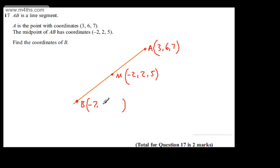I've gone down by 4, so I'm just going to go down another 4. I've gone down by 2, so I'm going to go down another 2, and that gives us now the point B.